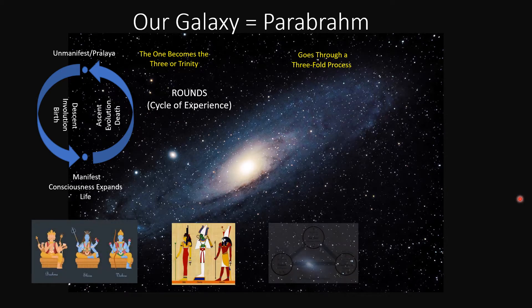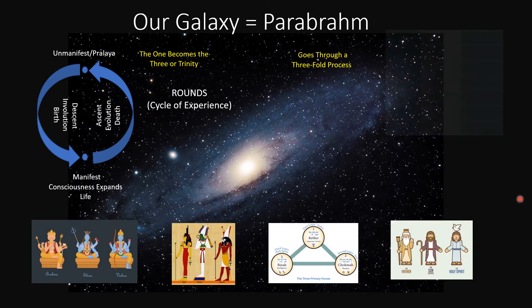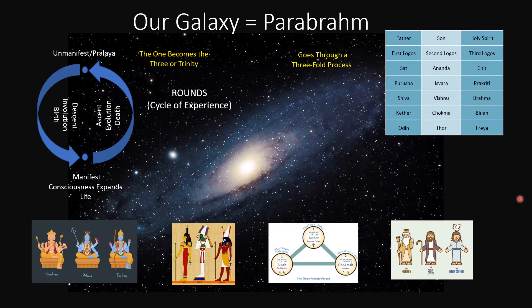Now this threefold process has been talked about in many different religions. Here we have Hinduism, Brahma, Shiva, Vishnu. Here we have ancient Egyptian, Isis, Osiris, and Horus. And here we have the esoteric tradition of Judaism, in Kether, Baina, and Chokmah, Christianity, Father, Son, and Holy Spirit. And here I have a few others, Odin, Thor, and Freya, Sat Chidanananda, Purusha, Prakritri, and Ishvara.